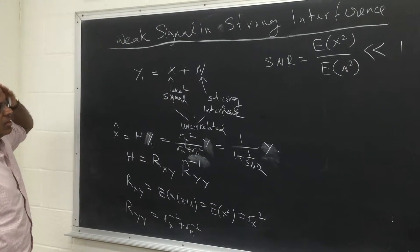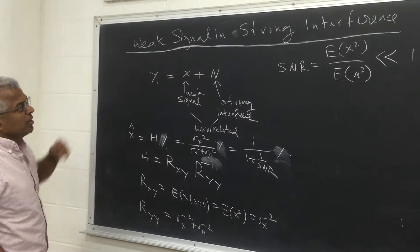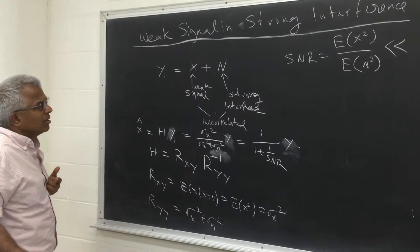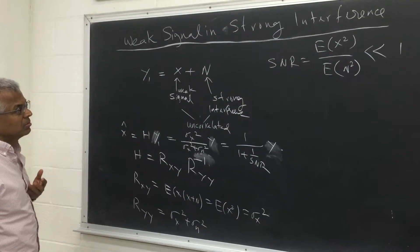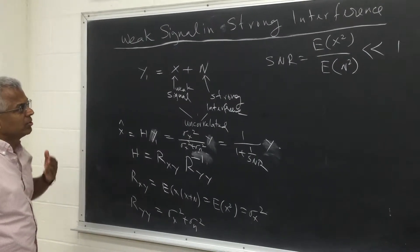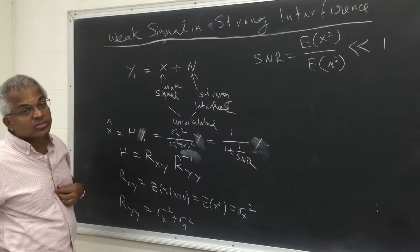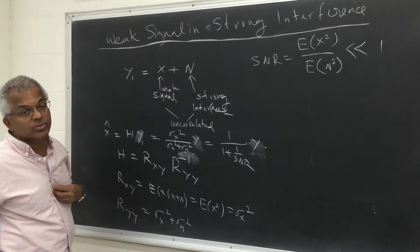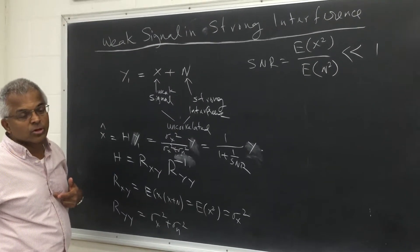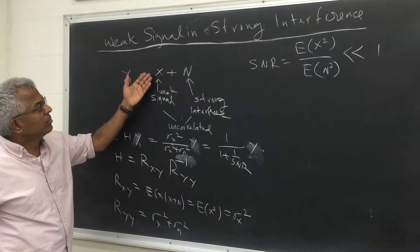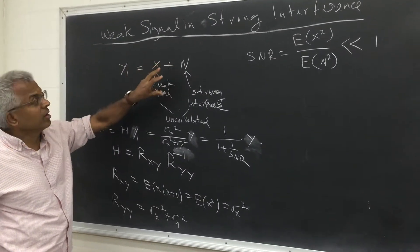Let's look at weak signal in strong interference — this is the problem of estimating the weak signal. It's a very practical problem that comes up in many real-world scenarios. For example, at a doctor's office, the doctor puts the stethoscope and wants to listen to a particular valve. That's the weak signal, but it is surrounded by strong interference.